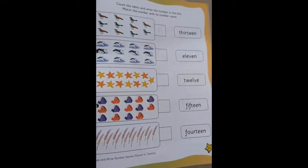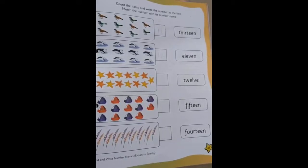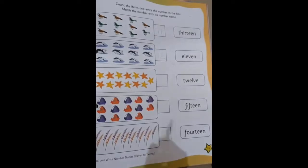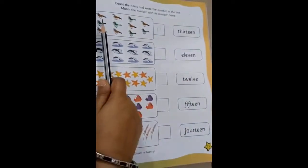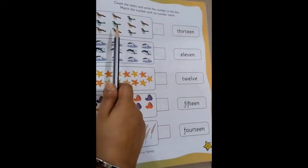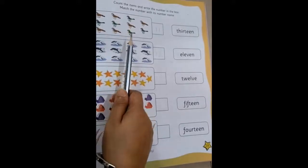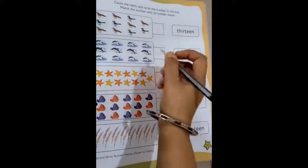So let's do the first part, counting the objects and writing the numbers. How many birds are there? Let's count: 1, 2, 3, 4, 5, 6, 7, 8, 9, 10, 11. So we write 11 out here, right?